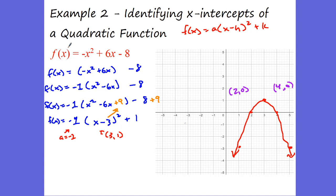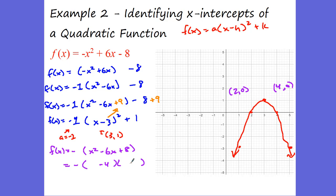We could have also factored the original function: f of x equals negative x squared plus 6x minus 8. The factors of 8 are 4 times 2, giving us negative x minus 4 times x minus 2. When x equals 4 and x equals 2, the function equals 0 — confirming exactly the x-intercepts we found. So I showed you both the vertex form and the factoring approach.